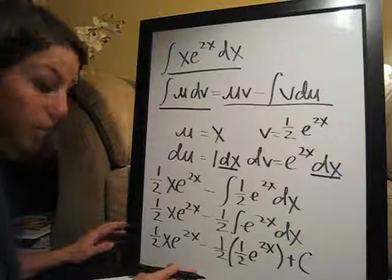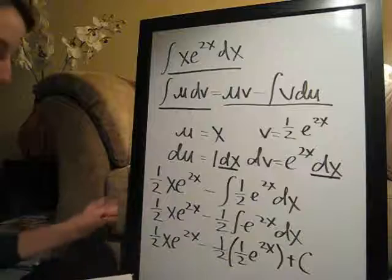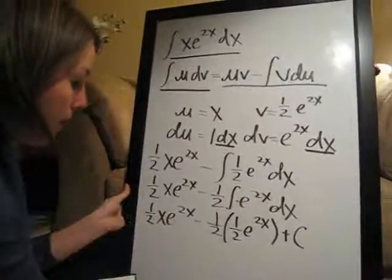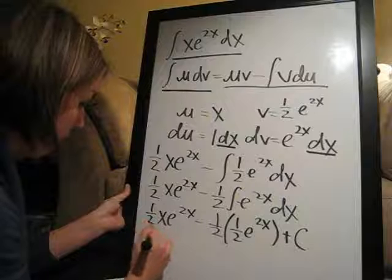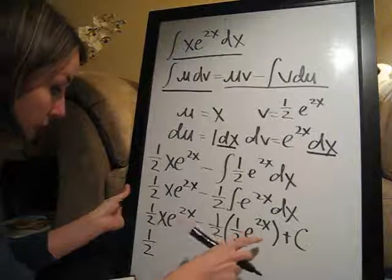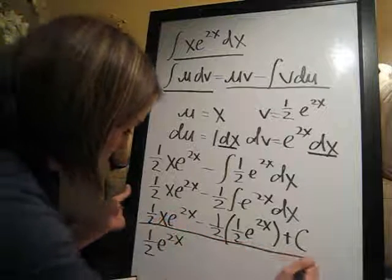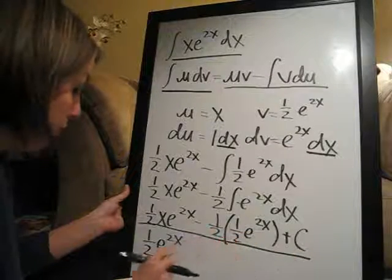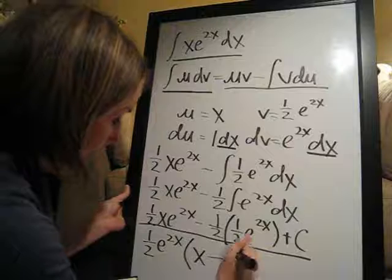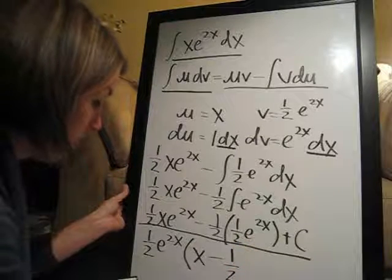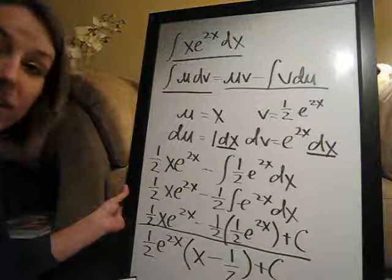So this could be our answer, but I'm just going to go ahead and simplify it. So I'm going to factor out a 1 half and an e to the 2x, which is in both terms. So 1 half e to the 2x times the x, which I have here, minus the 1 half, the extra 1 half, which I have in the second term, and that's everything, and then plus c to account for the constant, and that's the final answer. Thanks.